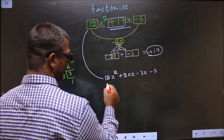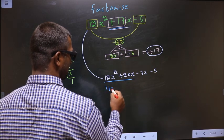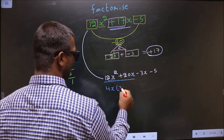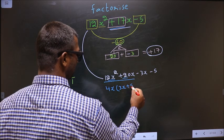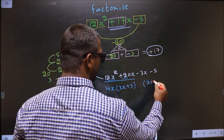Next, what can be taken out common from these two terms is 4x. So here you get 3x and here you get plus 5. Whatever you have got here, here also you should get the same thing.